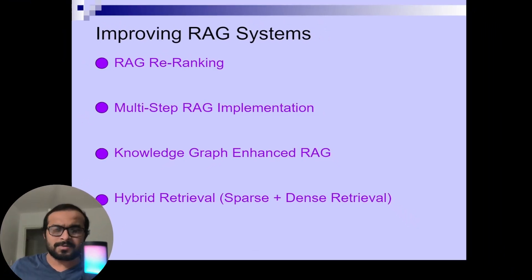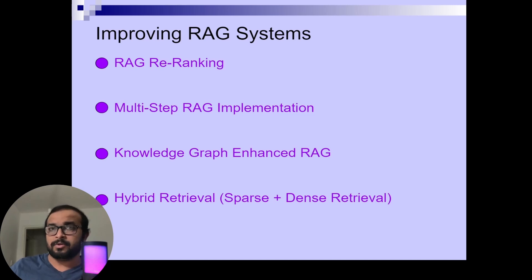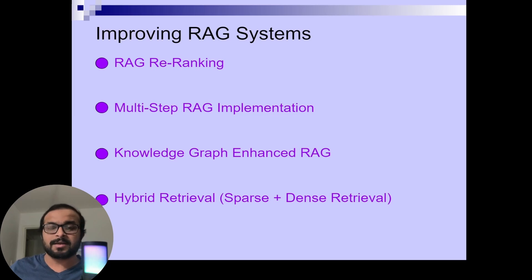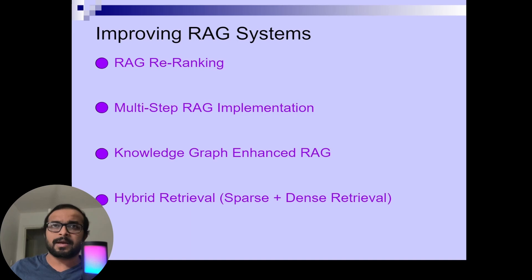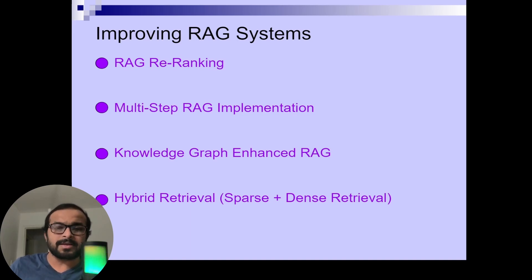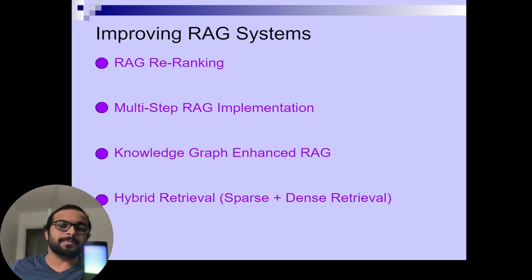There are lots of such techniques available. The most popular ones are RAG re-ranking, multi-step RAG implementation, knowledge graph enhanced RAG, and hybrid retrieval. Discussing all of these advanced RAG techniques will take significant time, so as part of this video I am going to discuss RAG re-ranking and multi-step RAG implementation. In future masterclasses, we are going to bring more in-depth reviews of all four systems and do more implementations.